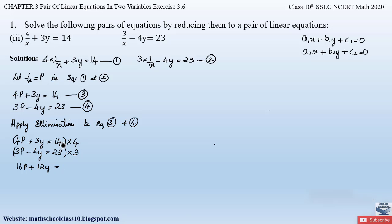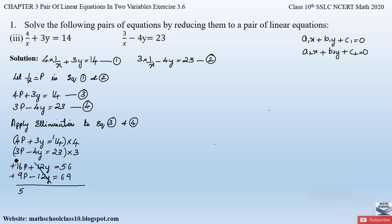Multiplying Equation 3 by 4: 4×4p + 4×3y = 14×4 gives 16p + 12y = 56. Multiplying Equation 4 by 3: 3×3p − 3×4y = 23×3 gives 9p − 12y = 69. Now +12y and −12y cancel each other out.